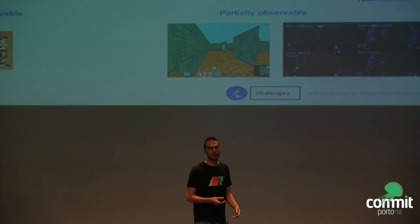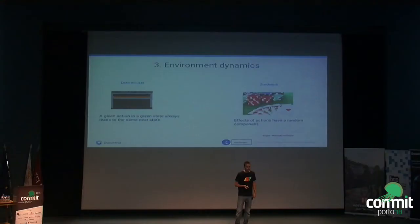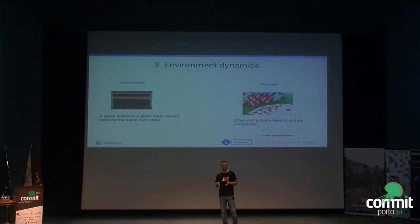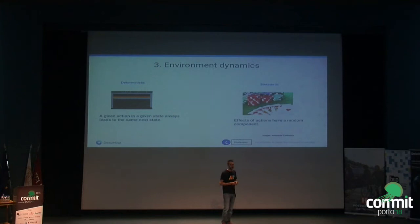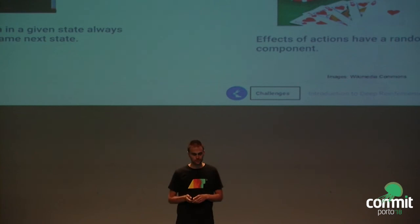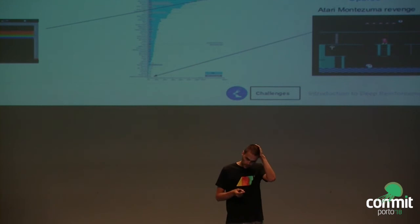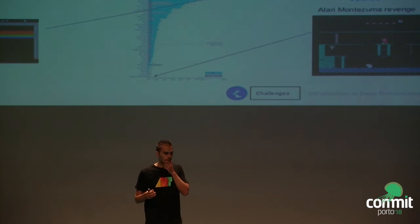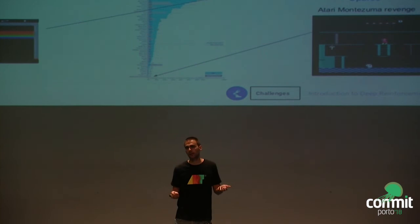Regarding environment dynamics: in some environments like Atari the effect of an action is deterministic — do it again and it leads to the same outcome. In other domains they are stochastic — there's a random component. If you kick a ball and the wind blows, it won't end up in the same location. This is harder because you need to understand how the world behaves when it's not fully predictable. Regarding the reward function: if an action always gives the same reward you can evaluate it. But if rewards are also random, you have to try many times to figure out if you did something good, because maybe you got a good reward just by luck.